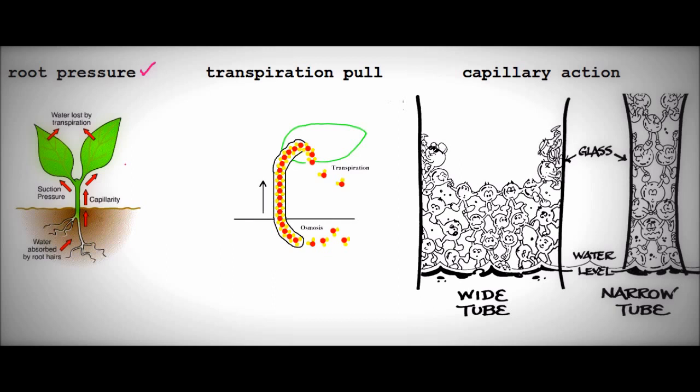The next theory to look at is the transpiration pull and this one is very wordy so I'll try and condense it down as much as I can. Basically the loss of water via evaporation from the leaves must be replaced by water coming up the xylem.